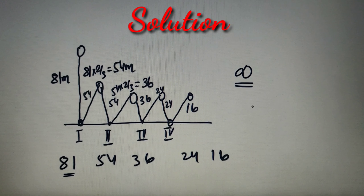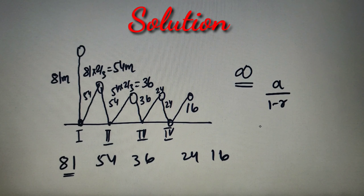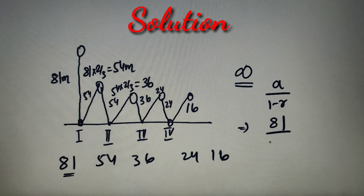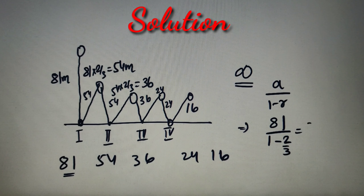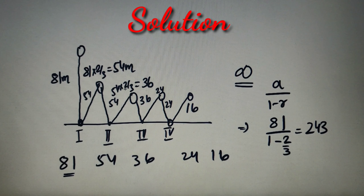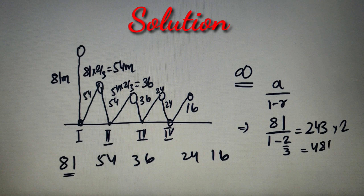The sum of an infinite GP is equal to a / (1 − r), where a is the first term and r is the common ratio. According to our question, a = 81 and r = 2/3. So the sum of the GP is 81 / (1 − 2/3) = 243. Now we have calculated the distance for only the downward or upward portion, but the ball is going both up and down. So we multiply by 2, giving us 486.